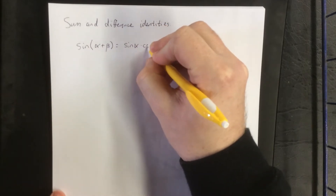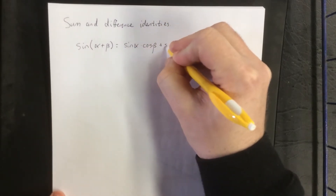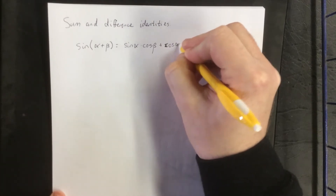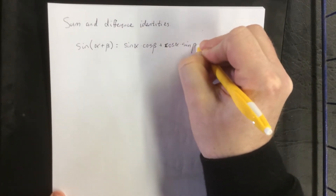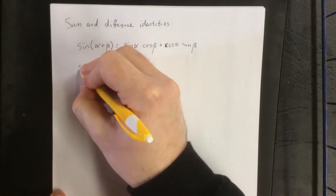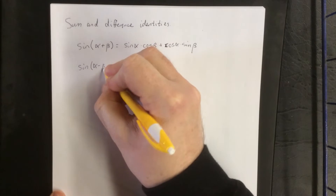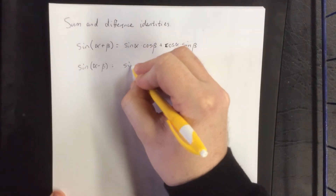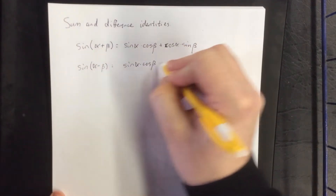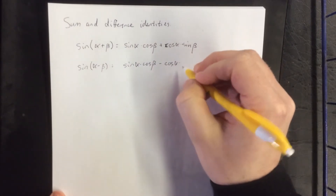Sine of a sum formula takes on the following form — there's a cosine alpha, and that's the order I want to write everything. And sine of a difference formula, alpha minus beta, is literally the exact same thing, just with a minus instead of a plus.